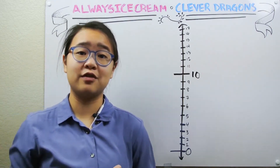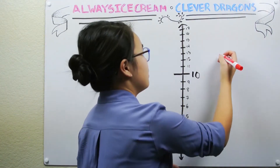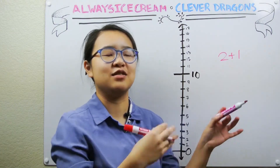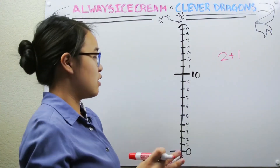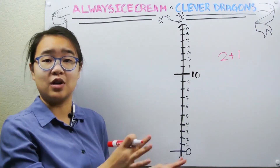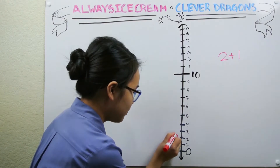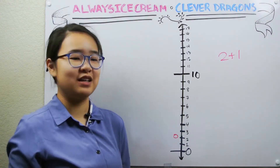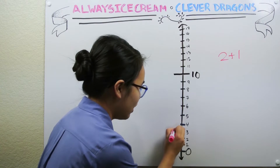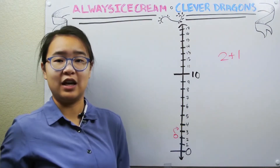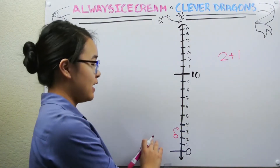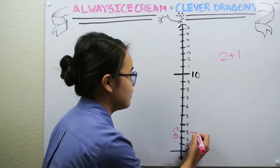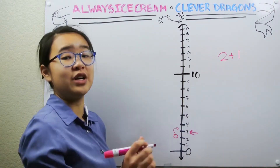Let's consider the very first problem we worked with: two plus one. If you remember, it's two candies and your friend gives you a candy. The way we would do this with the number line is we would start at two, then move up one step because your friend gives you one candy. And just like the problem, that gives us two plus one equals three total.